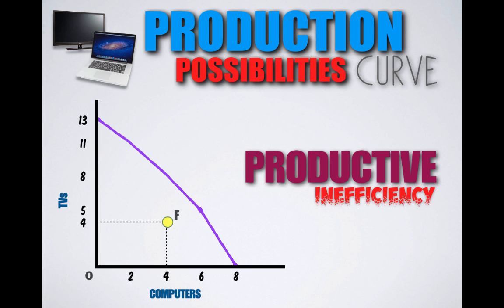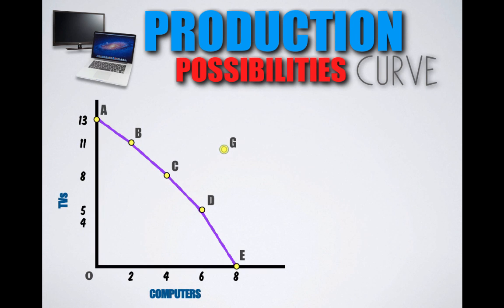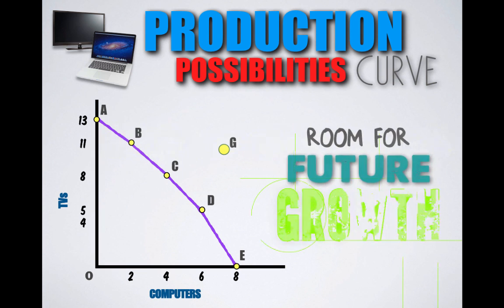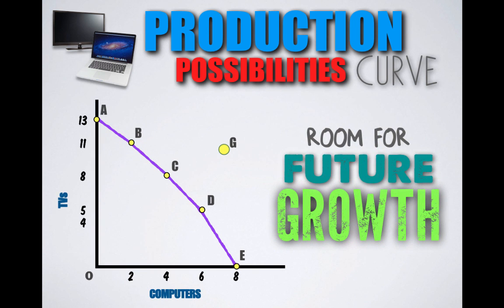Let's say Country B eliminated excessive unemployment and reached full production potential by moving from Point F to Point C on the production possibilities curve. By utilizing all their resources, Country B still produces four computers but gains four TVs, boosting TV output from four to eight. A production possibility combination outside the curve, like Point G, represents room for future growth — a combination Country B currently cannot achieve but would like to reach in the future.